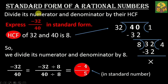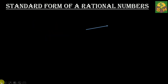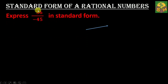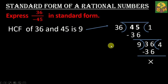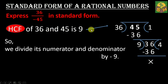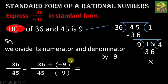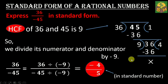We cannot reduce this number further as 4 and 5 are co-prime. Therefore, negative 4 over 5 is the standard form of the given rational number. Let's take another example: express 36 over negative 45 in standard form. Since the denominator is negative, we divide by negative HCF. The HCF of 36 and 45 is 9, so we divide by negative 9. The result is negative 4 over 5, which is the standard form.